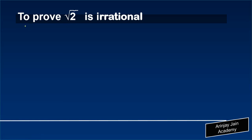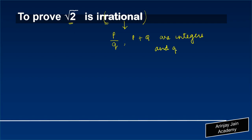In this video, we are going to prove that square root of 2 is an irrational number. Before we prove that, we will just recall what is a rational number. A rational number is a number which can be expressed in a form of P upon Q, where both P and Q are integers and Q is not equal to 0.